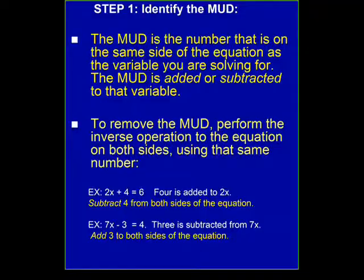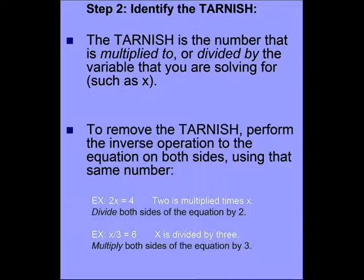Your next step is to identify the tarnish. The tarnish is a number multiplied or divided by the variable you're solving for, such as an x. And to remove it, again, you do the inverse operation on both sides. But in this case, the inverse operation will be either multiplication or division. In 2x equals 4, 2 is multiplied times x. So, you divide both sides of the equation by 2. In x divided by 3 equals 6, you multiply both sides of the equation by 3, since multiplication is the inverse operation of division.